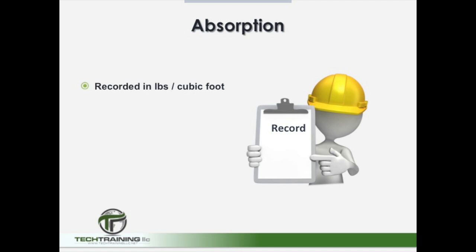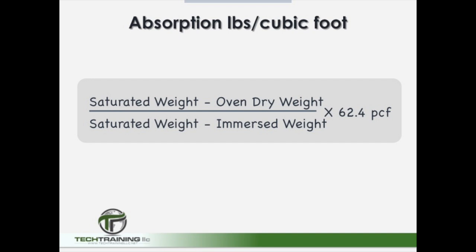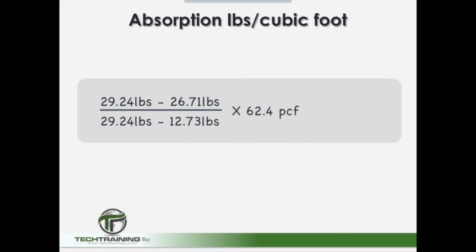When calculating absorption, you want to record it in pounds per cubic foot and also as a percentage of the unit. To calculate absorption in pounds per cubic foot, we take the saturated weight minus the oven dry weight, divided by the saturated weight minus the immersed weight, and multiply by 62.4 pounds per cubic foot. Plugging in our data: 29.24 minus 26.71, divided by 29.24 minus 12.73, times 62.4, equals 9.56 pounds per cubic foot of absorption.